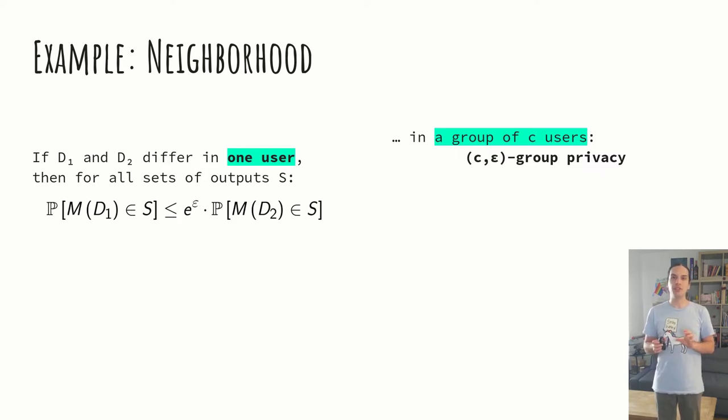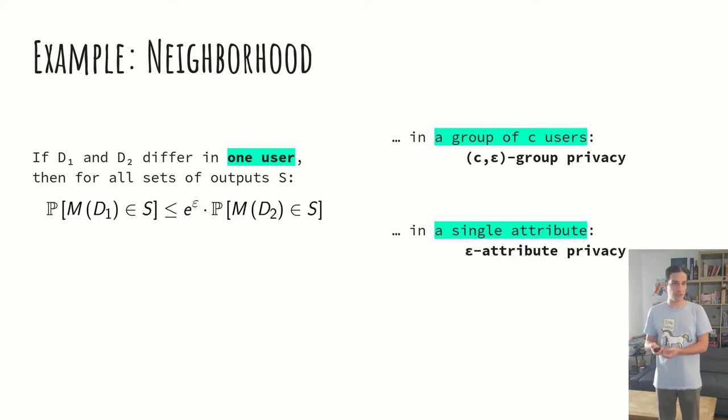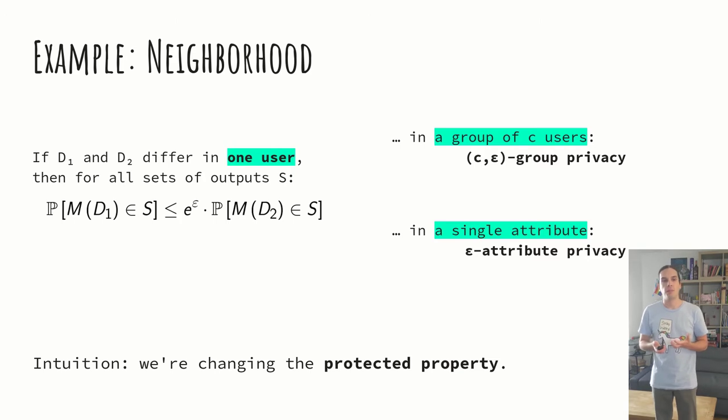In the original definition, D1 and D2 differ in one user. And it means that, based on the output, you can't find out which one between D1 and D2 we picked initially. So, what if we change this neighborhood definition into, for example, a group of five users? We obtain something that's called five-epsilon group privacy.